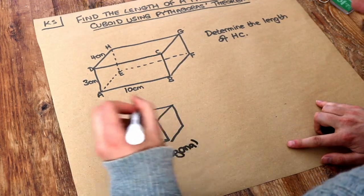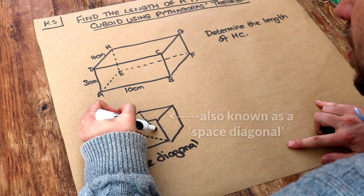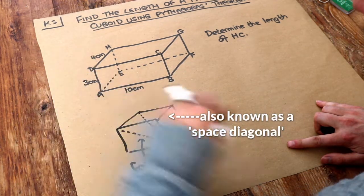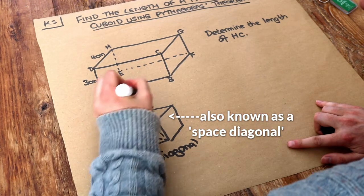An internal diagonal is one that goes inside the shape, so this line is going across the inside of the shape, so that's an internal diagonal.